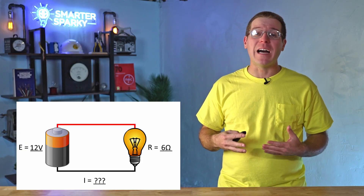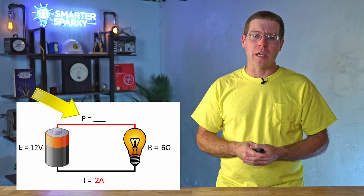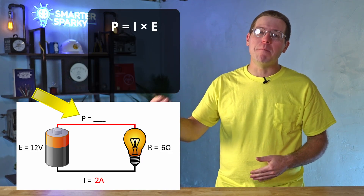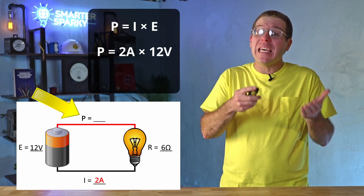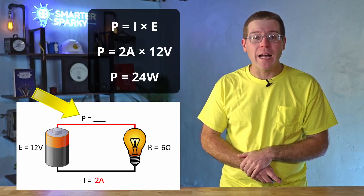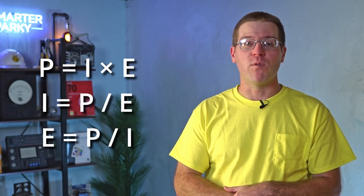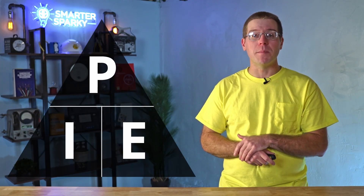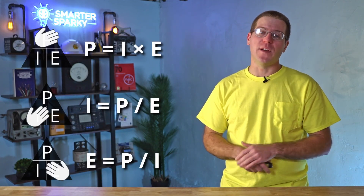Let's grab one of our previous examples. We calculated that the current was 2 amps. We can further calculate the power of this circuit by taking the current and multiplying it by the voltage. So the wattage of the load is going to be P equals 2 amps times 12 volts, or 24 watts. Just like Ohm's Law, Watt's Law has three different arrangements for the same formula, and just like Ohm's Law, Watt's Law can be put into a triangle to help us remember all of these formulas. Just remember pi and use that to fill in the triangle.